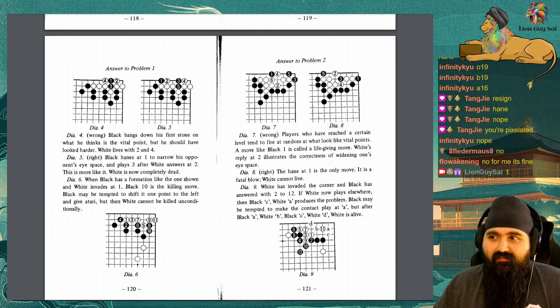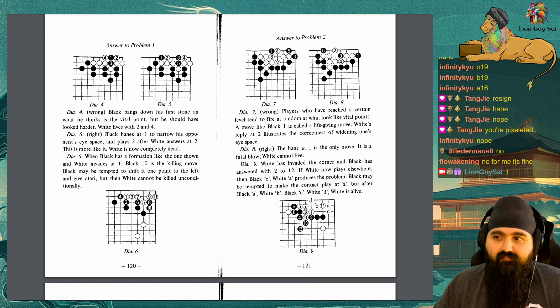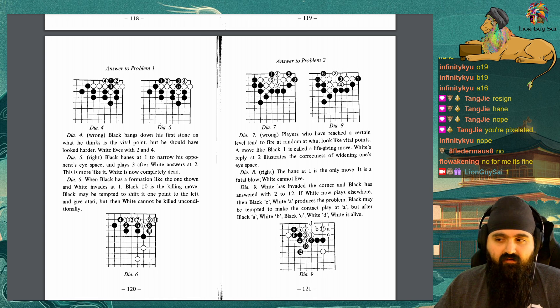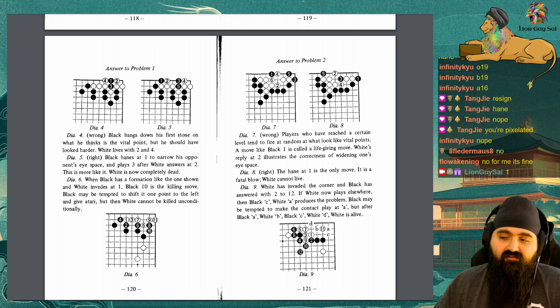Answer to Problem 1. Diagram 4: Wrong. Black bangs down his first stone on what he thinks is the vital point, but he should have looked harder. White lives with 2 and 4. Diagram 5: Right. Black hones at 1 to narrow his opponent's eye space, and plays 3 after White defends at 2. This is more like it. White is now completely dead.